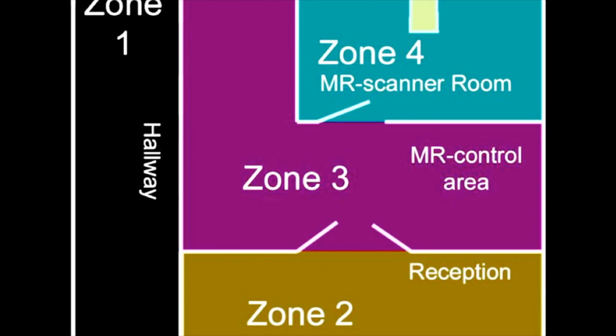Next is Zone 3. Access is restricted by physical barriers such as doors with coded access. Inside Zone 3, only approved MR personnel and patients that have undergone MR screening are allowed. Zone 3 contains the MR control room.